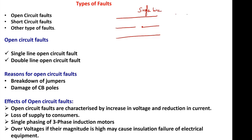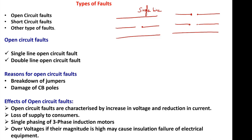Similarly, if two conductors are open out of three conductors — it can be in a transmission line, it can be in a feeder, it can be in a transformer — if two conductors are open circuited, then it is called double line open circuit fault.